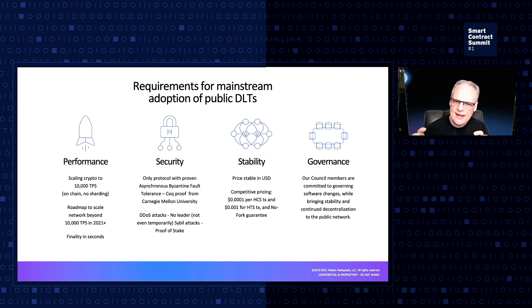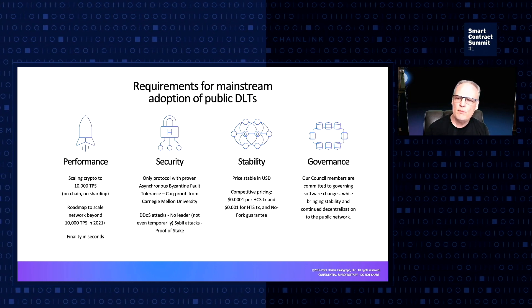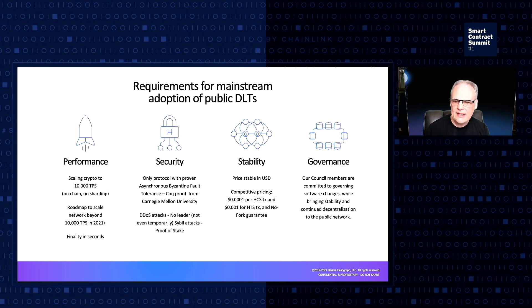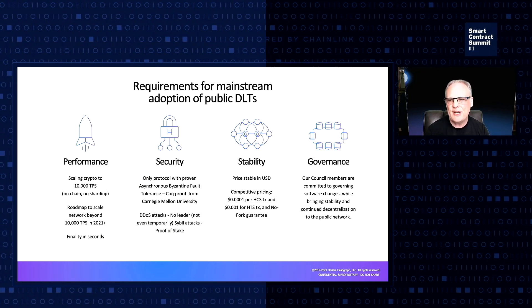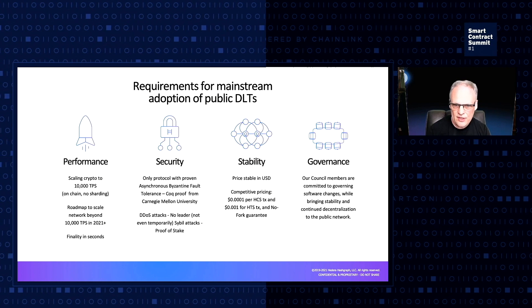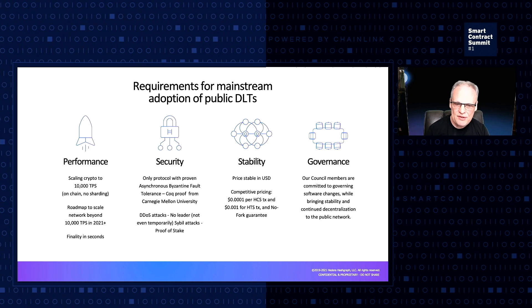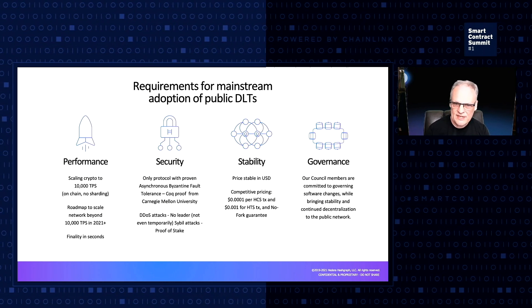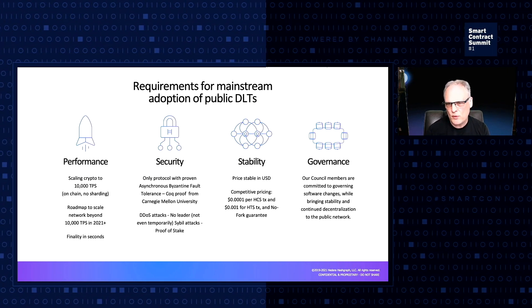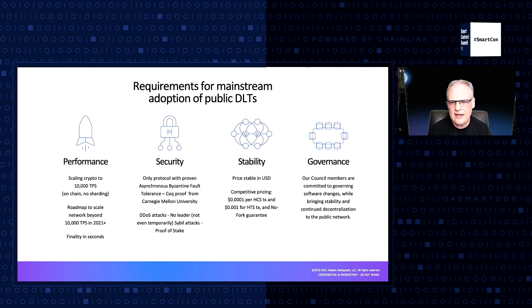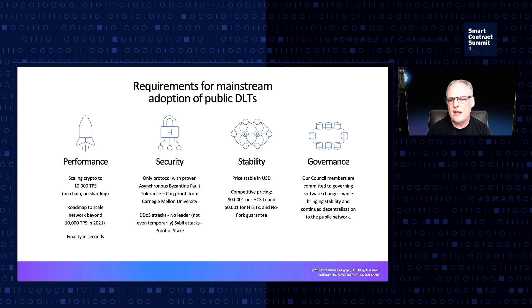That's in the beta version of the network — it's throttled down. We expect to go much higher than that, and then to millions of transactions per second through sharding. So Hashgraph checks that first box. In terms of security, I've already talked about asynchronous Byzantine fault tolerance. Hashgraph achieves that and the performance simultaneously, so the algorithm itself checked two of the four boxes we identified back in 2017. The other two are more business related: stability of the network and governance.